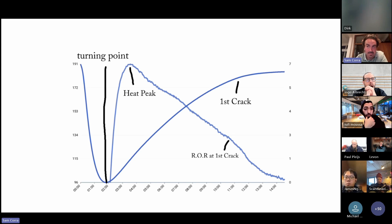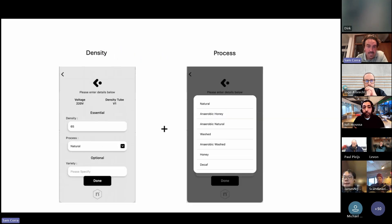Longer the profile, generally speaking, the lower this number is going to be sitting. But it's also a number to look at depending on these elements here: density and process of the coffee.